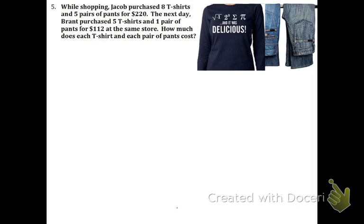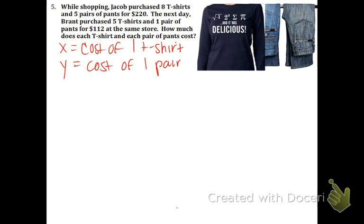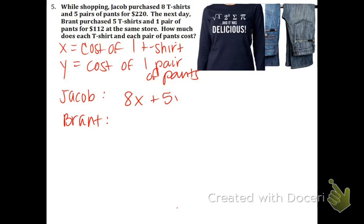Okay, application problem. Jacob and Brant are going shopping — they are buying t-shirts and pants. Those are going to be our variables. x equals cost of one t-shirt and y equals cost of one pair of pants. Since there are two guys shopping, we're going to make one equation for each guy. Jacob's buying 8 t-shirts, so we write 8x. He's also buying 5 pairs of pants, so that would be 5y. You always attach the amount of items with the cost by multiplication, and his total is $220. Brant is buying 5 t-shirts and 1 pair of pants for $112. Now you could use either substitution or elimination.